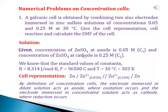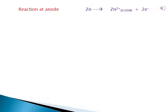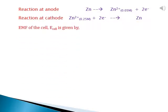By definition of concentration cells, the electrode immersed in dilute solution acts as anode where oxidation occurs, and the electrode immersed in concentrated solution acts as cathode where reduction occurs. The reaction at anode is: Zn → Zn²⁺ + 2e⁻, and the reaction at cathode is: Zn²⁺ + 2e⁻ → Zn.